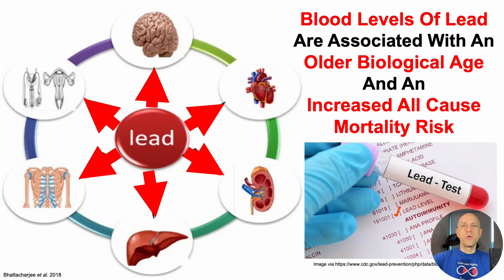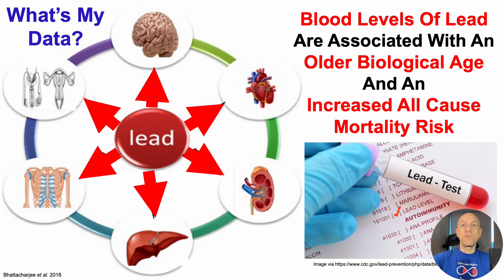In an earlier video, we saw that blood levels of lead are associated with an older biological age and an increased risk of death for all causes. A major focus of the channel is to optimize biomarkers of organ and systemic function, with the goal of staying as youthful as possible for as long as possible. So with that in mind, what's my data for lead, and what may help keep plasma lead levels relatively low?